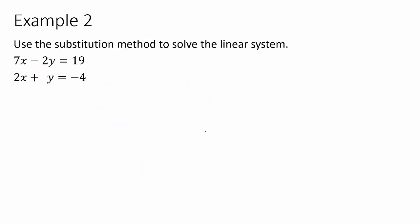In example two, we start differently because we don't have an equation already solved for a variable, so we have to do that work ourselves. Technically we could solve for x or y in either equation and get the right answer, but in math we always want to pick the easiest way. The concept isn't usually the hard part — it's the arithmetic that gets us. The best thing to solve for here is the y in the second equation.